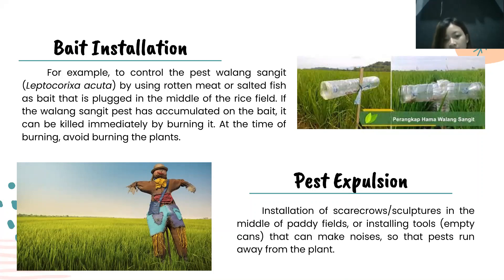The next method is pest expulsion: installation of a scarecrow or sculpture in the middle of the field, or installing tools that can make noises so that pests run away from the crop field.